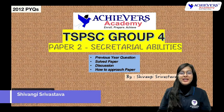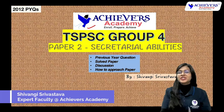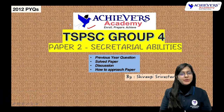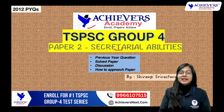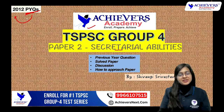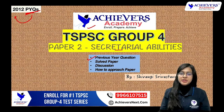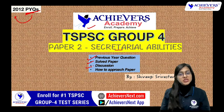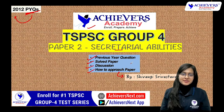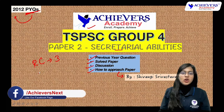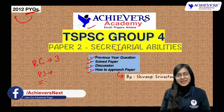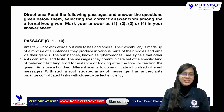Hi everyone, welcome to Achievers Academy. Today we are going to discuss the paper of TS PC Group 4, Secretarial Abilities. This is a previous year question paper from 2012. We will solve this paper and discuss how to approach it. This is presented by Shivangi Shrivastava. In this paper we have three sets of RCs and a lot of para-jumble questions, so let's get started with reading comprehension.